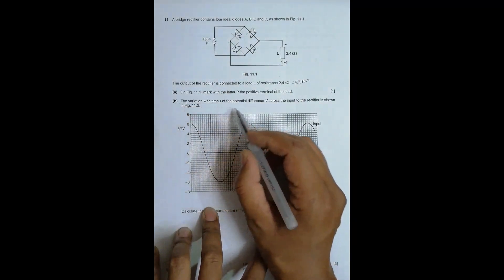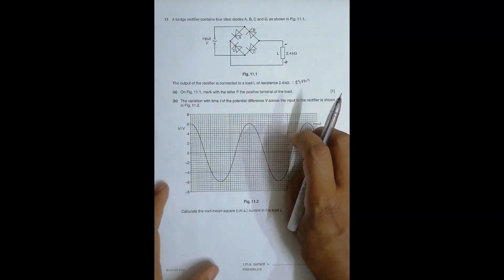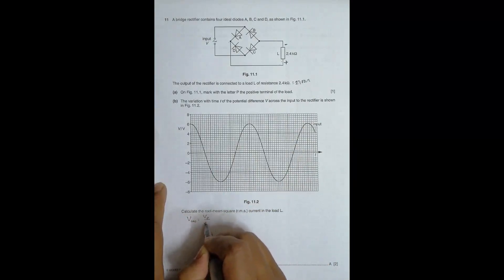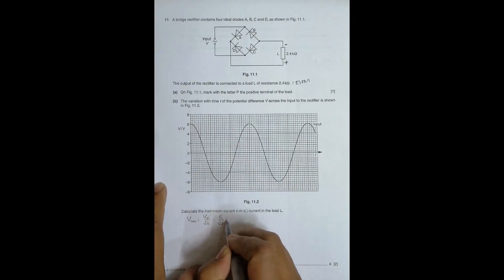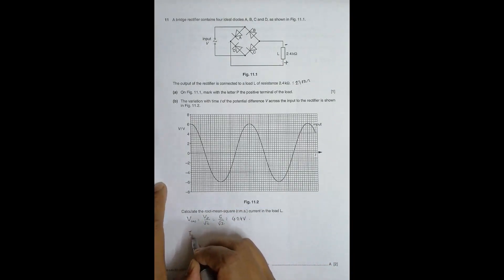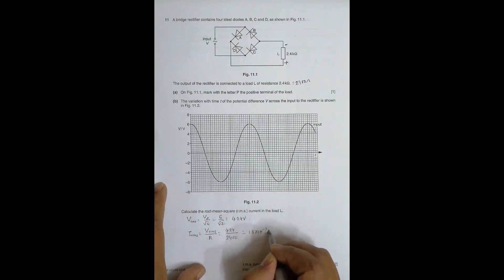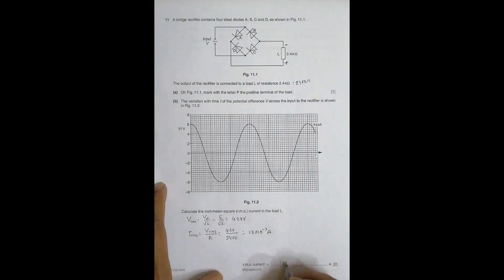Part B: the variation with time t of the potential difference V across the input to the rectifier is as shown. Calculate the root mean square current in the load. First, we find V_RMS, which equals V_peak divided by root 2. The peak value is 6 volts, so V_RMS equals 6 divided by root 2, which gives 4.24 volts. Then I_RMS equals V_RMS divided by resistance, so 4.24 divided by 2400 ohms, giving 1.8 × 10⁻³ amperes.